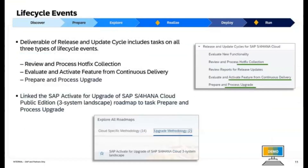Lifecycle Events and Hot Fix Collection: The SAP Activate Methodology updates for lifecycle events include adding tasks to the Release and Update Cycle deliverable, covering three key lifecycle events: Review and Process Hot Fix Collections, Evaluate and Activate Features from Continuous Delivery, and Prepare and Process Upgrade. These tasks streamline lifecycle management, and the SAP Activate for Upgrade of SAP S/4HANA Cloud Public Edition Three System Landscape Roadmap is now linked to the Prepare and Process Upgrade task, offering a structured guide for handling upgrades in a three-system landscape.